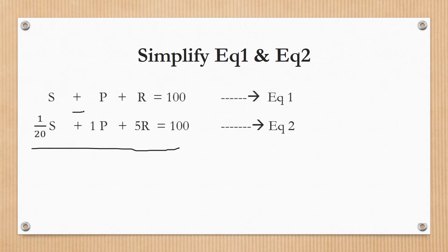Eliminate P by subtracting the second equation from the first equation. Subtract the like terms: S minus S/20, P minus P gets cancelled, R minus 5R, then 100 minus 100.